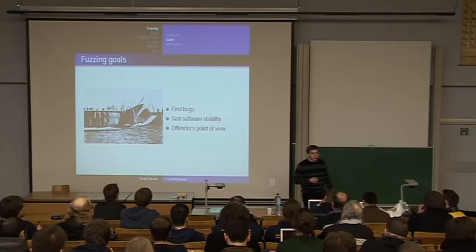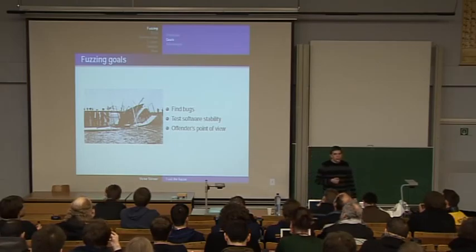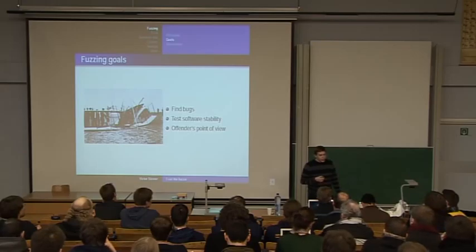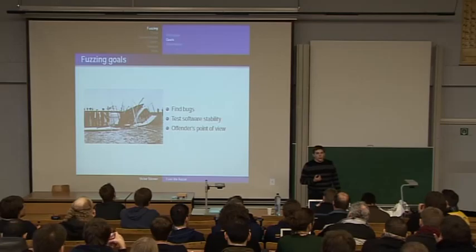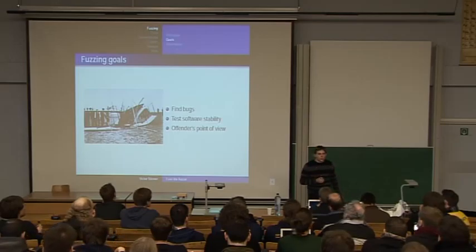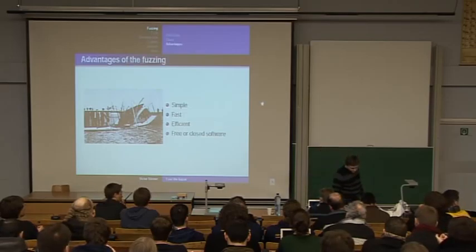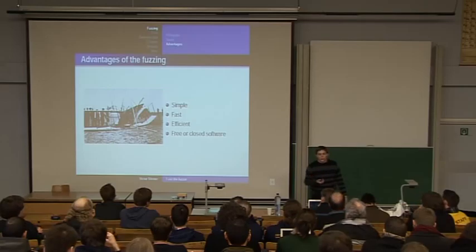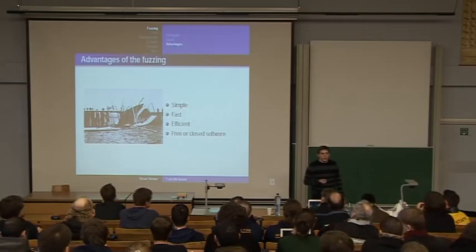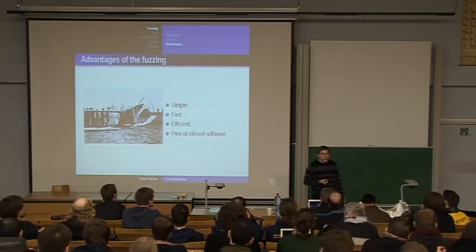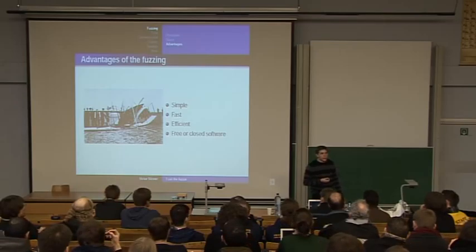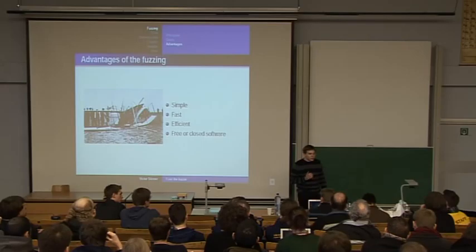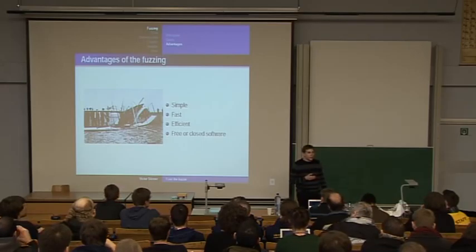You can use fuzzing to test software stability, but also the security or the quality of the software. All of the fuzzing is done from the point of view of the vendor, so your goal is really to crash the program. The advantage of fuzzing in comparison to static code analysis or dynamic code analysis is that fuzzing is really, really simple, which means that in four hours you can write a fuzzer and find the first bugs. It's very fast because most fuzzers find bugs in one minute or maybe one hour — very fast compared to static analysis, which can take many hours.